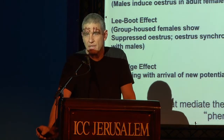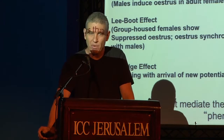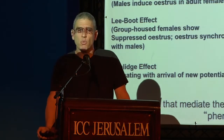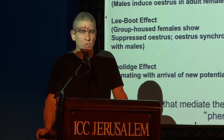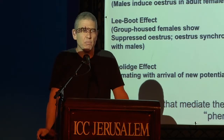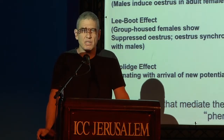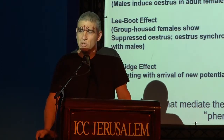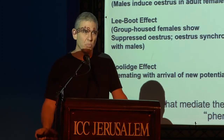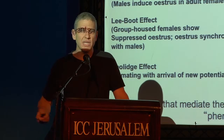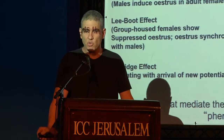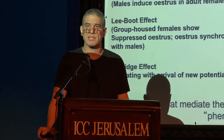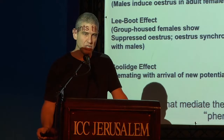Chemo-signaling in rodents entails really dramatic effects. I'll point out two — one more dramatic and one more amusing. The more dramatic one is the Bruce effect: if a pregnant rodent, typically a mouse, at a critical stage of pregnancy is exposed to the odor of a non-stud male — that is, the male that did not father the pregnancy — then the pregnancy will be aborted. This effect is quite robust, occurring about 60% of the time. We know it's due to chemo-signaling because if we damage a particular portion of the chemo-signaling apparatus in the nose of the female, the effect disappears — it's dependent on exposure to the urine of the male.